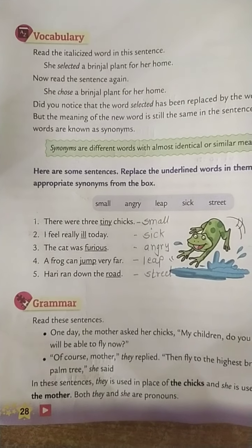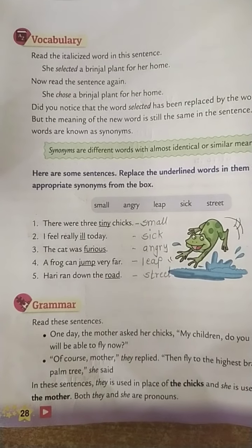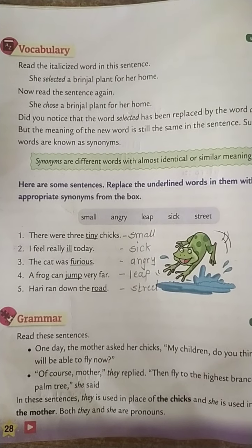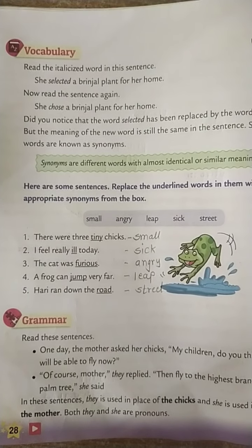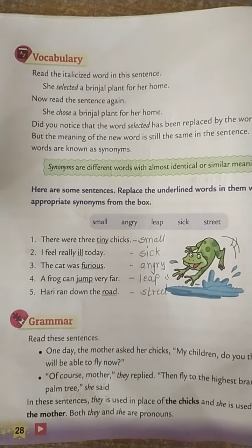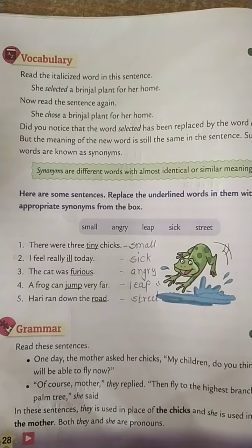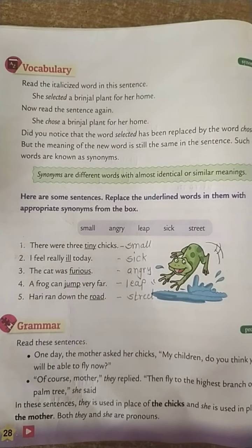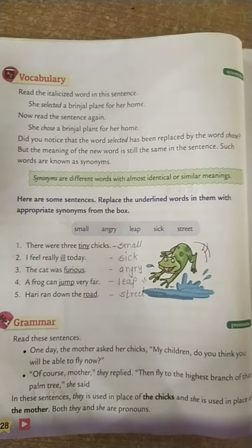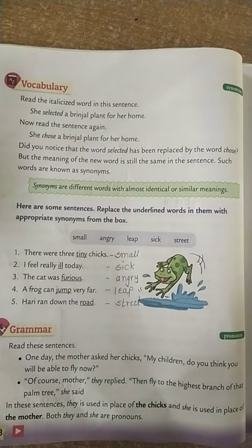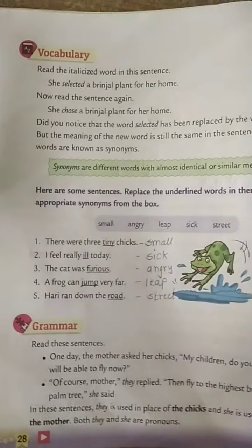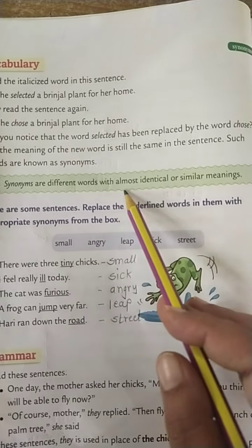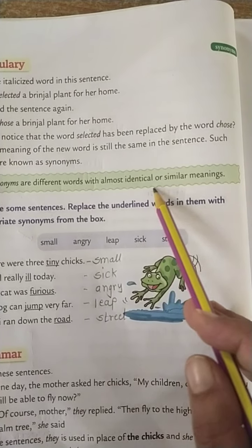Good morning dear students, welcome back. We are doing exercises of lesson number two, 'The Tailor Bird and a Naughty Cat.' Some exercises we have already done in the previous video, so remaining exercises we will continue in today's class. Take out your English textbook — page numbers 28, 29, 30, and 31. Let's start with vocabulary. Synonyms are different words with almost identical or similar meaning.